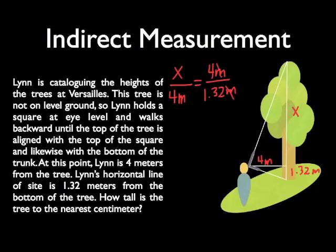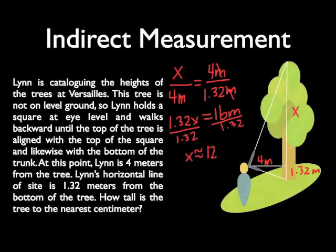Notice what happens on the right-hand side of the equation. Our units reduce. We can use the cross products property of proportions. And notice that four times four meters is 16 meters. And then we can divide both sides by 1.32.